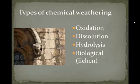Now there are several types of chemical weathering: oxidation, dissolution, hydrolysis, and some biological forms like lichen. Let's go through these.